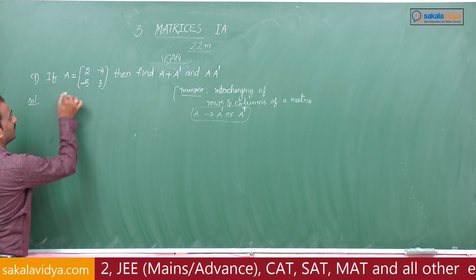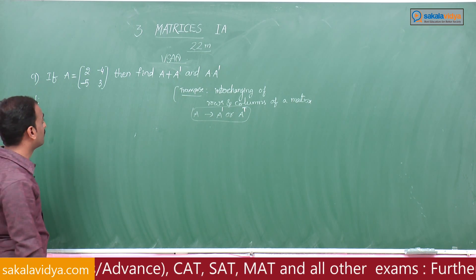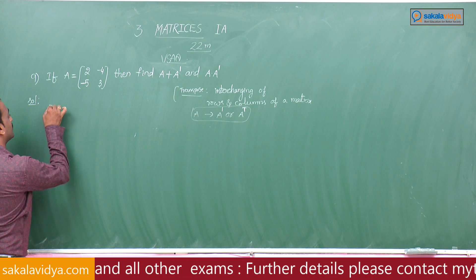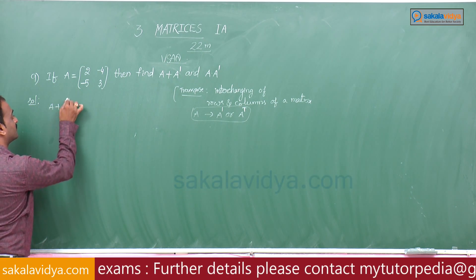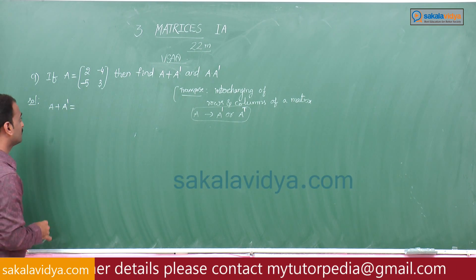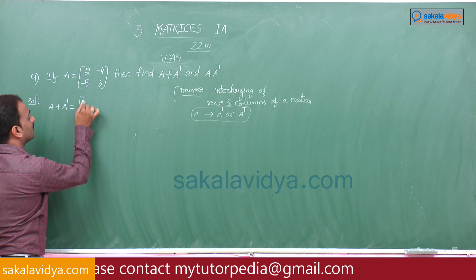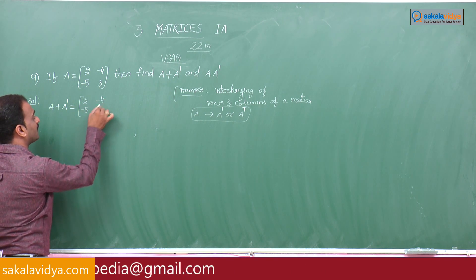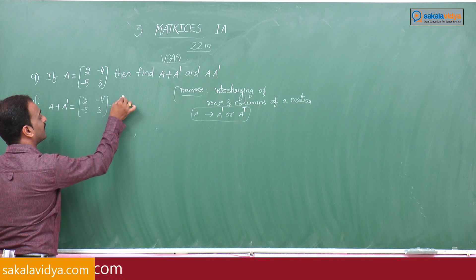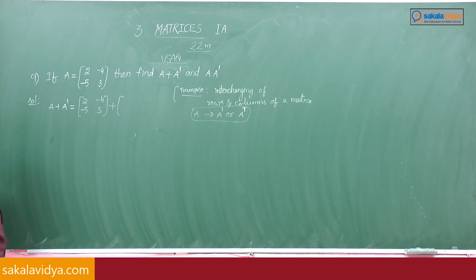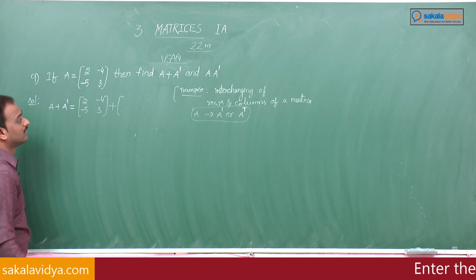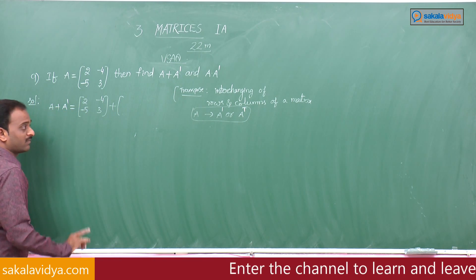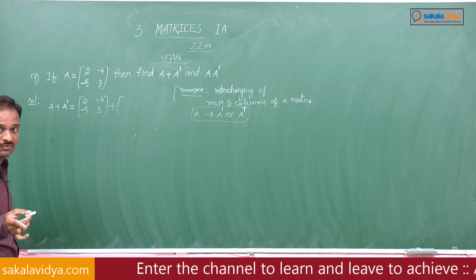Now the given matrix A equals [[2, -4], [-5, 3]]. To find A plus A transpose, first we need A transpose. Interchanging of rows and columns of the given matrix gives us A transpose.